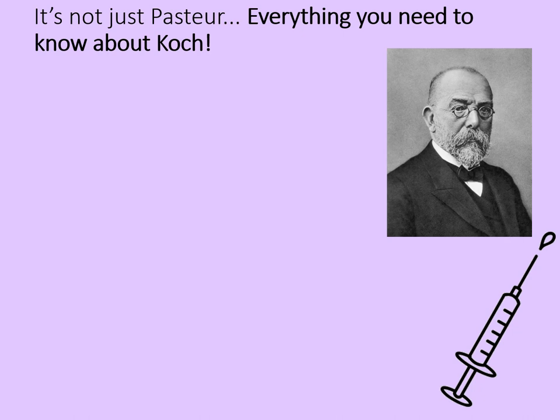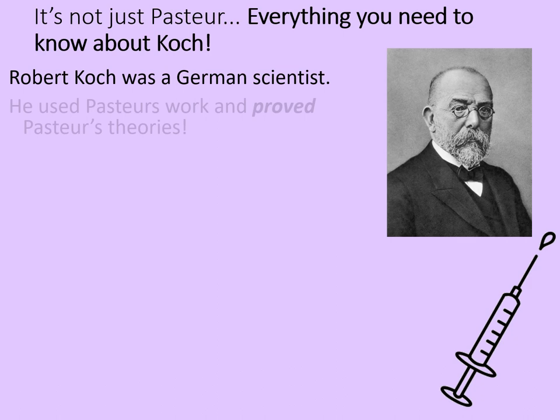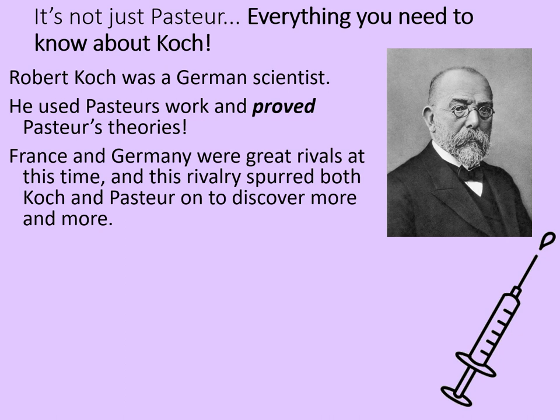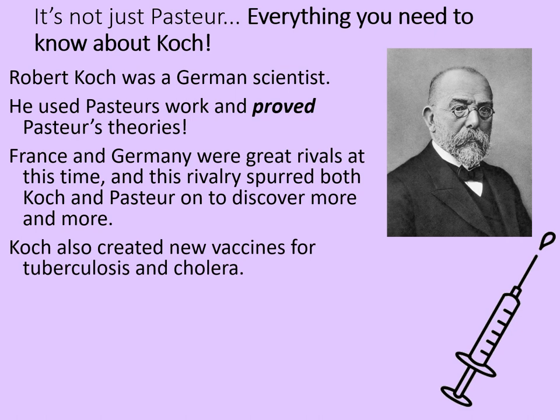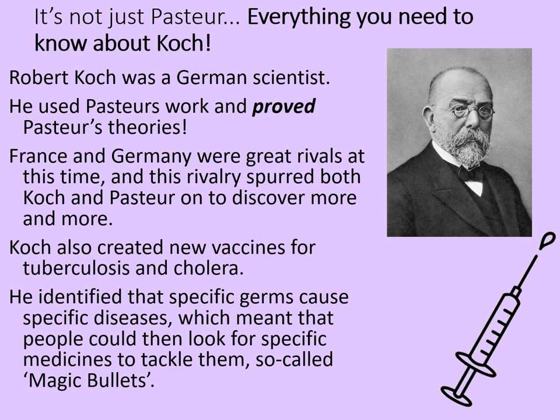It's not just Pasteur. In this video we're going to look at everything you need to know about Koch. Robert Koch was a German scientist who used Pasteur's work and proved Pasteur's theories. It's important to realize that in the late 1800s, France and Germany were great rivals, and this rivalry spurred both Koch and Pasteur on to discover more and more. Koch also created new vaccines for tuberculosis and cholera, although his vaccines weren't always effective. He identified that specific germs cause specific diseases, which meant that people could then look for specific medicines to tackle them — so-called magic bullets.